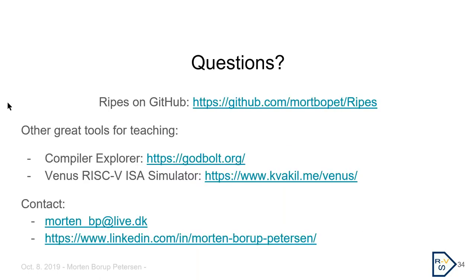RIPES is fully open source on GitHub with pre-compiled binaries available, so you can just download it and try it out. Other great tools for teaching include Compiler Explorer, which is very nice for investigating and trying out different compilers easily, and another RISC-V simulator.